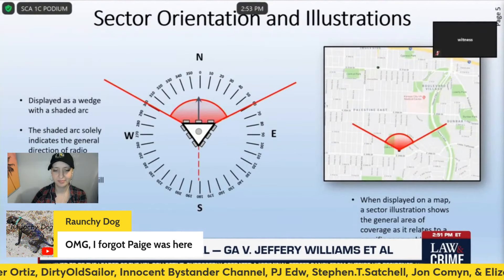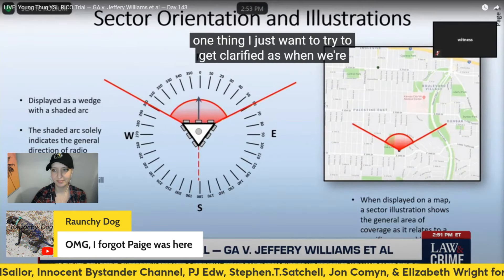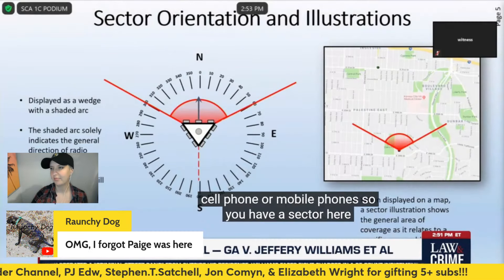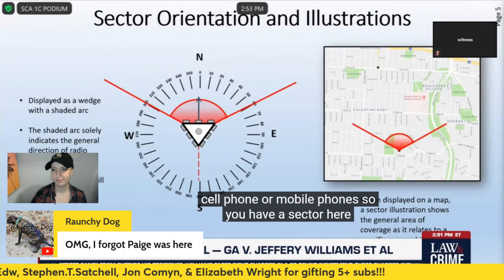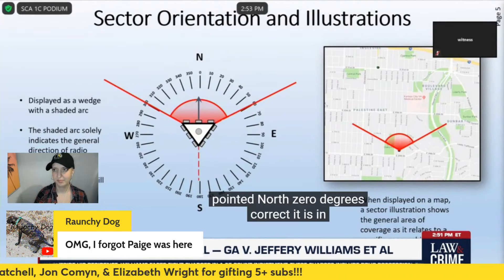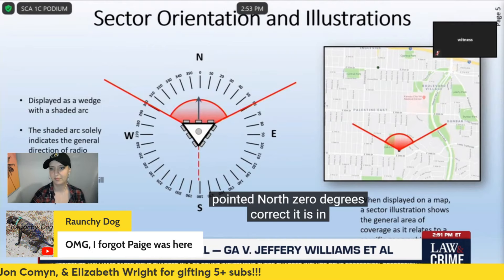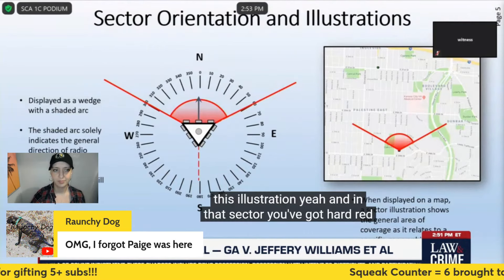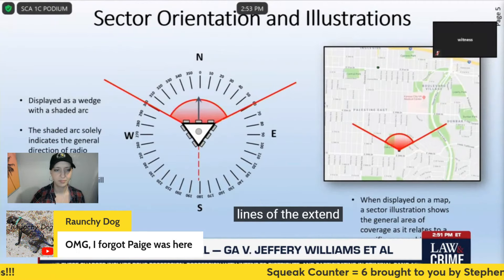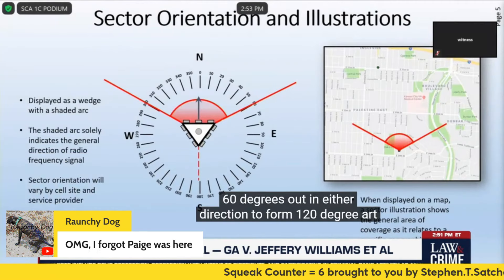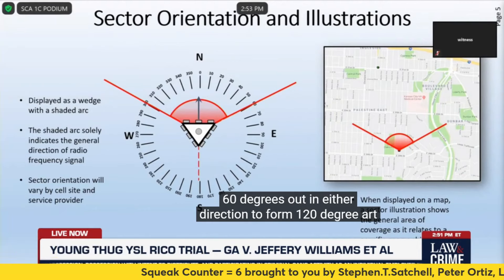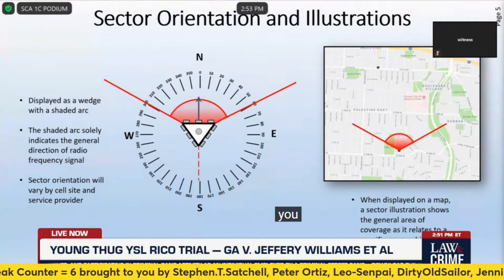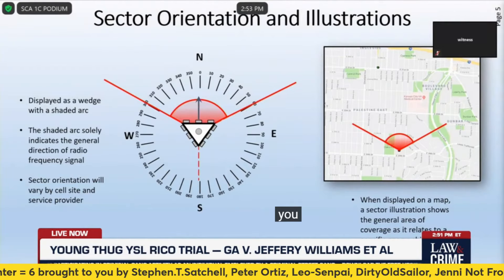One thing I want to get clarified is when we're talking about locations of cell phones or mobile phones. You have a sector here pointed north, zero degrees, correct? It is in this illustration. And in that sector, you've got these hard red lines that extend 60 degrees out in either direction to form a 120-degree arc, correct? Yes, sir. And you state the shaded arc solely indicates the general direction of radio frequency signal, correct? That's correct.